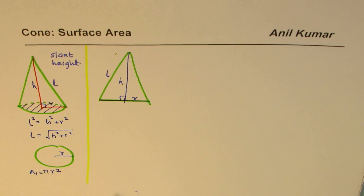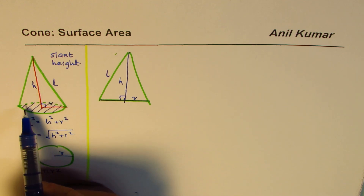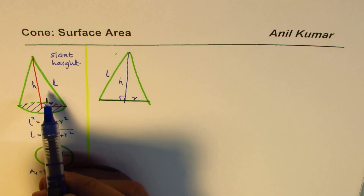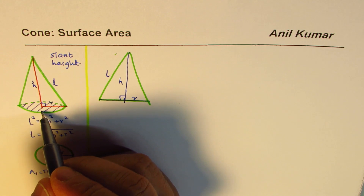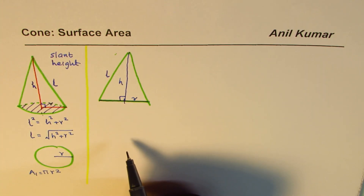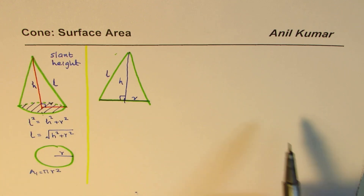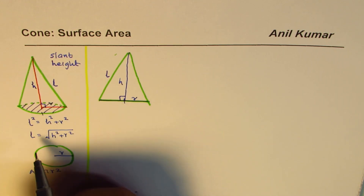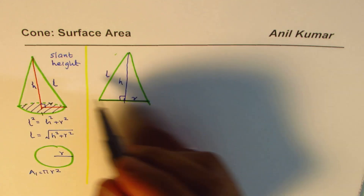We've covered the circular base. Now we need to find the lateral area, which involves the slant height L. That's difficult directly, so the strategy is to cut the lateral surface open and spread it flat on paper — just like drawing a net for a 3D shape — and then measure the area in two dimensions.